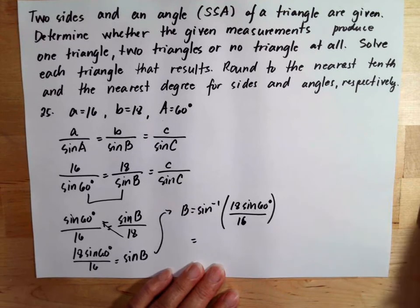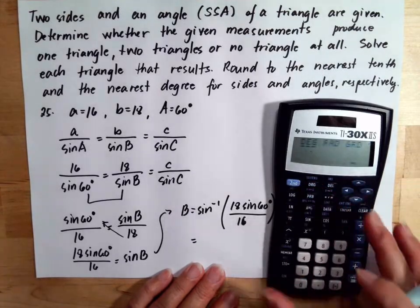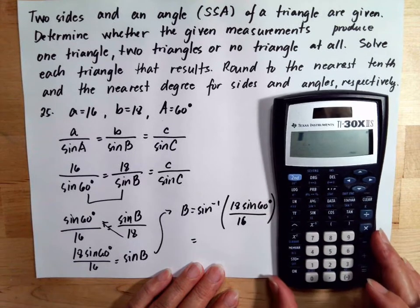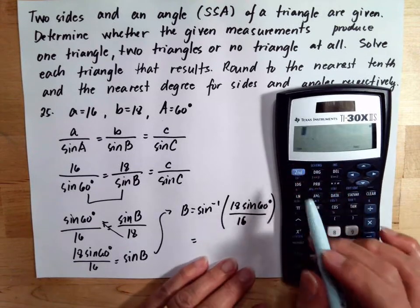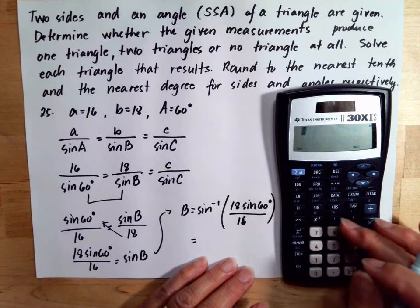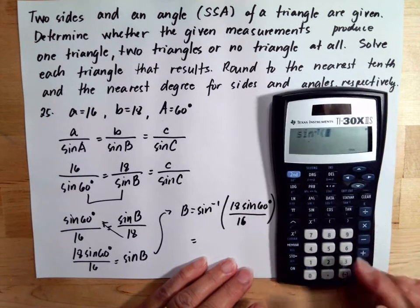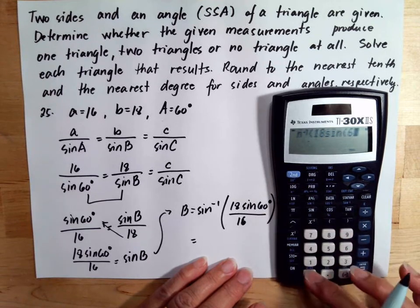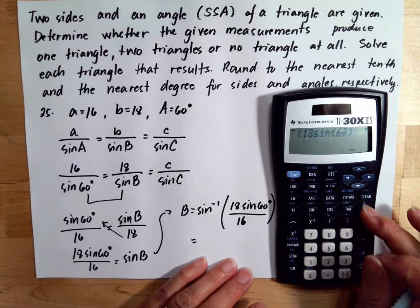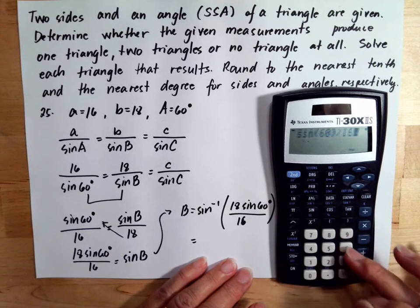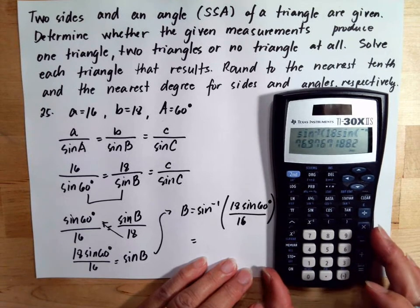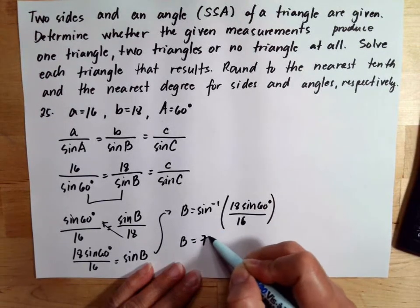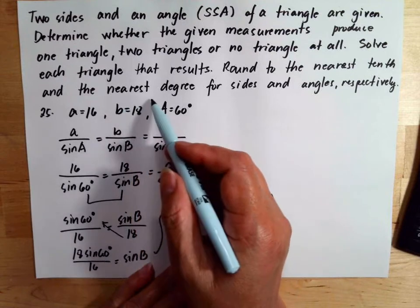First check that the calculator is set to degrees. Then take the inverse sine: inverse sine of (18 sine 60 divided by 16). This gives 76.97, so angle B is 77 degrees, rounding to the nearest degree.